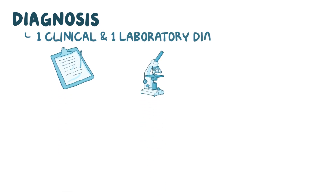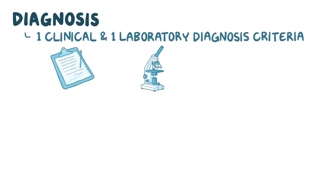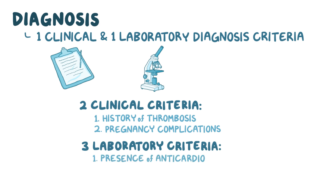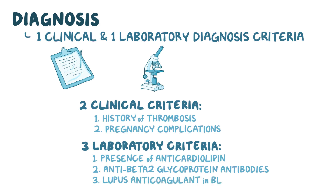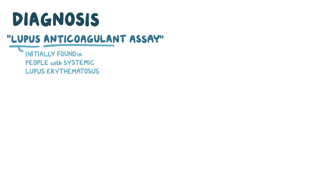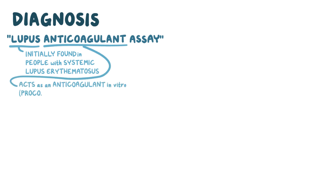Diagnosing antiphospholipid syndrome requires meeting at least one clinical and one laboratory diagnostic criteria. The two clinical criteria are history of thrombosis and pregnancy complications, while the three laboratory criteria are presence of anticardiolipin, anti-beta-2-glycoprotein antibodies, or lupus anticoagulant in the blood. Lupus anticoagulant is a funny name — it's called lupus because it was initially found in people with systemic lupus erythematosus, and it's called anticoagulant because it acts as an anticoagulant in vitro, even though it's a procoagulant in vivo.